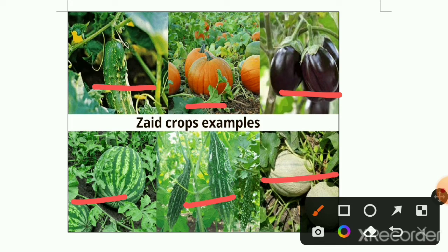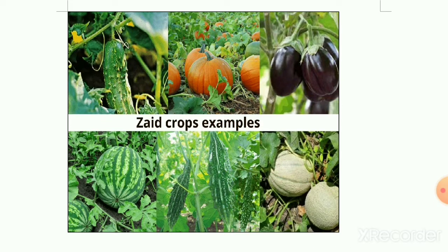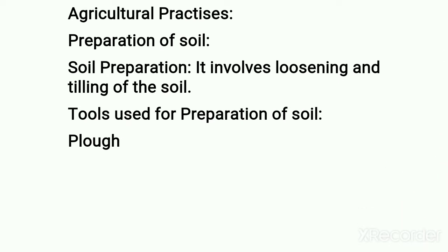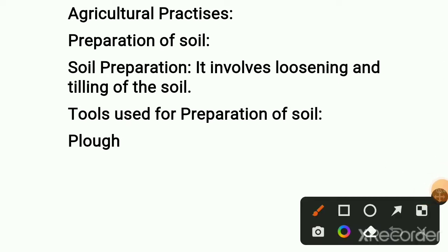Now we know what is crop and what types of crops there are. Now, how to develop this crop? That is called agricultural practices — the process involved in growing plants or sowing plants and maintaining them. There are seven steps involved in agricultural practices; we'll see them one by one.